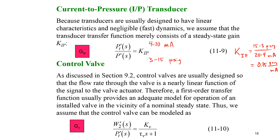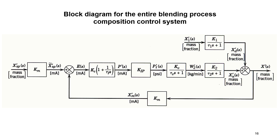We also have our control valve. If it's fast, we assume the time constant is zero. But not all control valves are fast, so we may need dynamics described by a first-order plus dead-time model. The gain relates a delta flow rate divided by delta PSIG, and the time constant is typically in units of time like seconds.